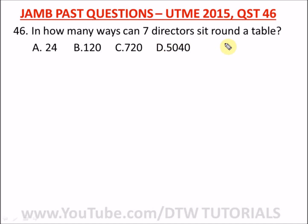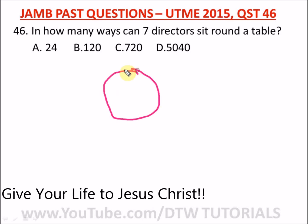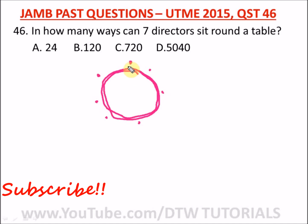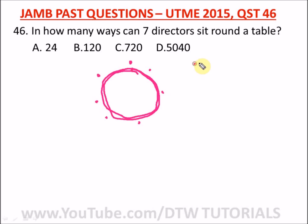The question says: in how many ways can seven directors sit around a table? On a round table, one person has to occupy a fixed position. The remaining six people would then be arranged. To find the permutation, we have seven minus one factorial, which is six factorial.